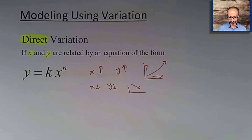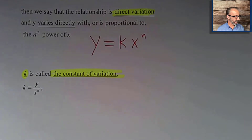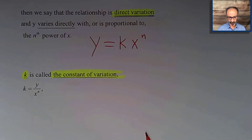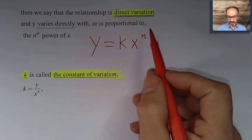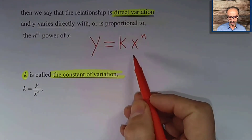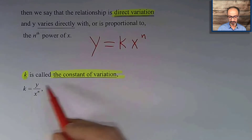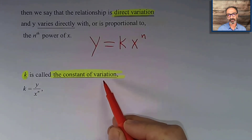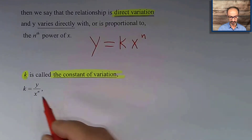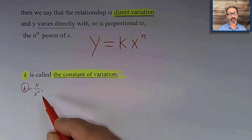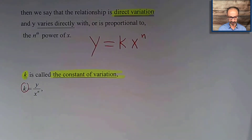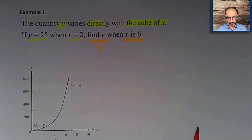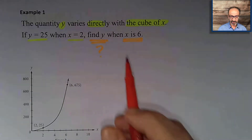I have the notes highlighted and everything is ready to go to save you some time. For direct variation, we have y equals k times x to the power n. We call k the constant of variation. If you want to solve for k, divide both sides by x to the power n, so it reads k equals y over x to the power n.